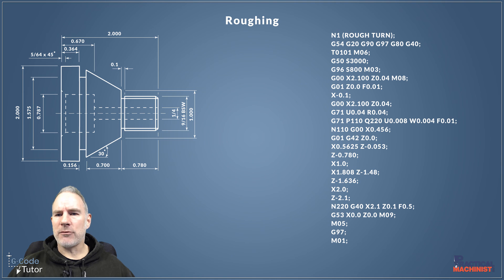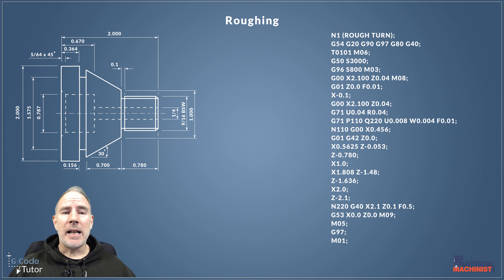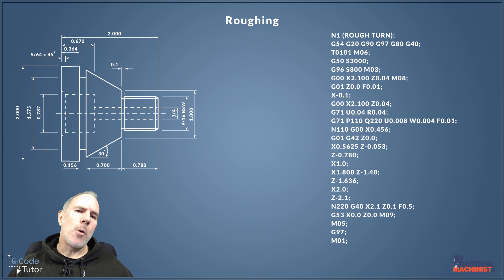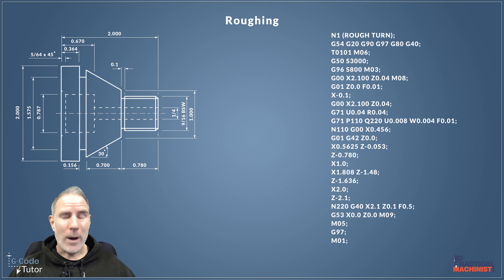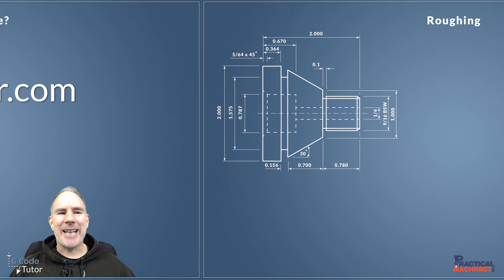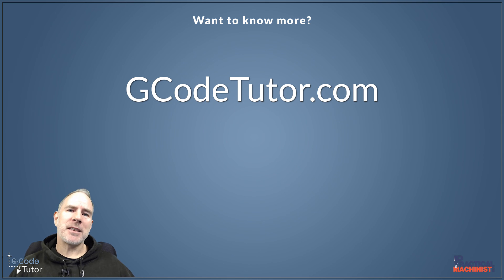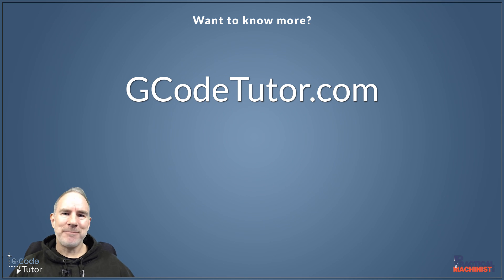That's how to write a roughing sequence on a lathe. The next video in the series will cover the finishing sequence, where we'll call upon that subroutine once more for a finishing pass. For more on G-code programming, I have up to 12 courses at gcodetutor.com covering G-code programming, computer-aided design, machine shop maths, and manual lathe skills.